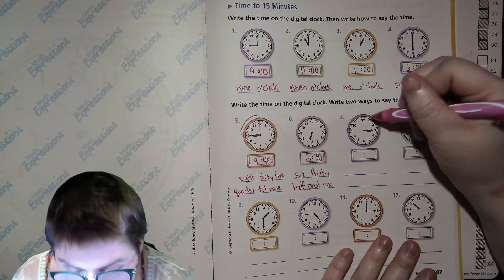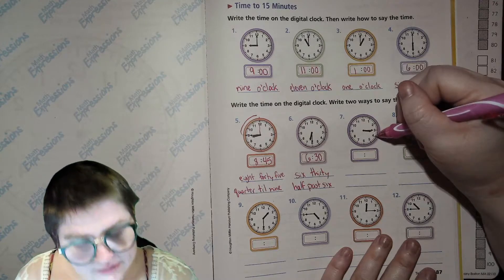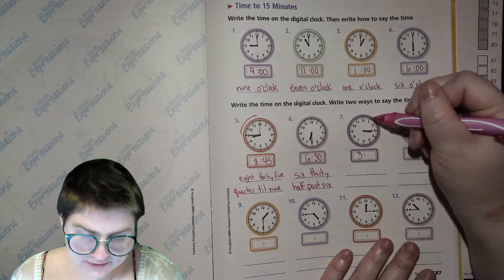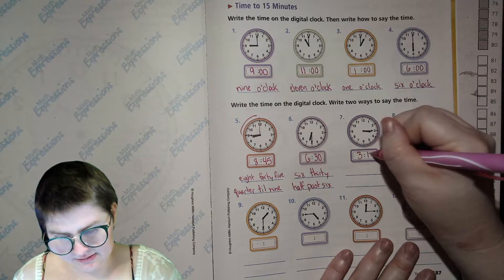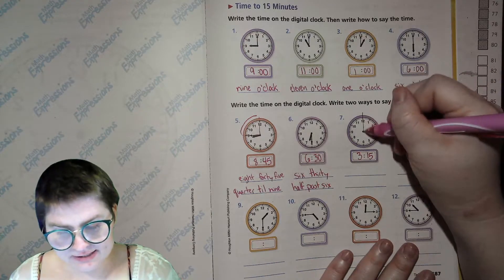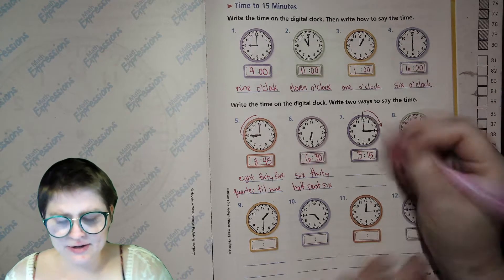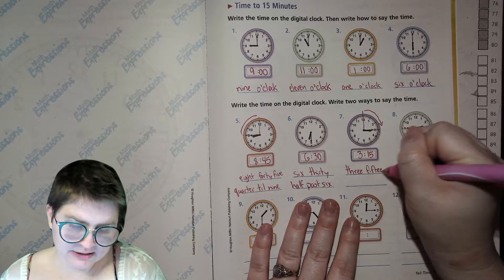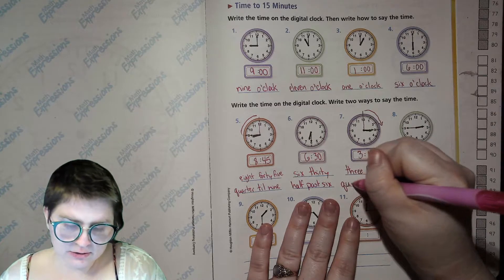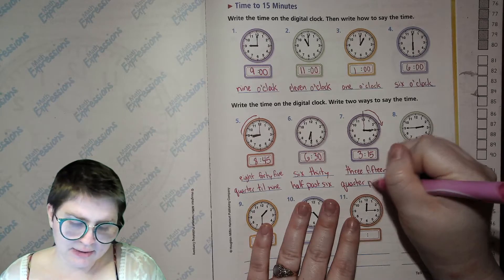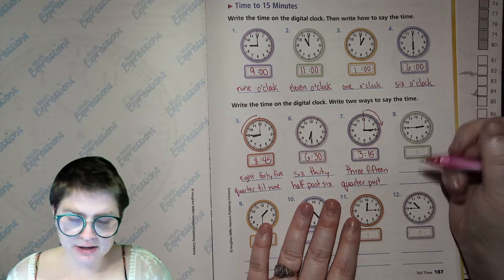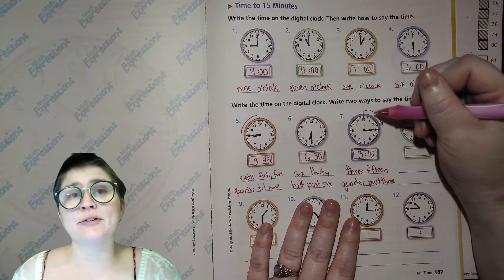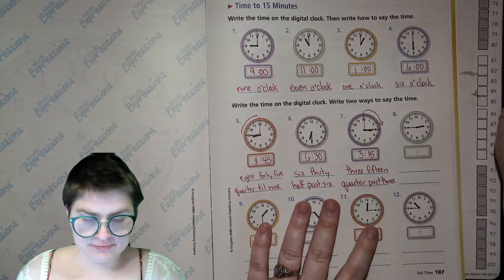Next one. Our hour hand, it's not quite 4 o'clock yet. It's still 3 o'clock. So we put 3. And then our minute hand, 5, 10, 15. Now here we have another example of a quarter of an hour, that 15 minutes. So we can say 3:15. We can also say quarter past 3. Because it was 3 o'clock and now it is a quarter of an hour past 3 o'clock.